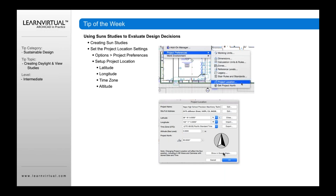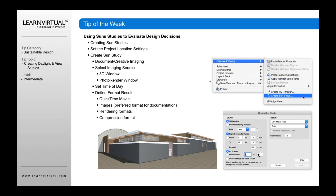You can also show that in Google Maps as well. Once you've created that information, you can go into your sun study options to create a sun study. To do that, go to your document menu, select Create Imaging, and then open or select Create Sun Study, and this dialog will open up.